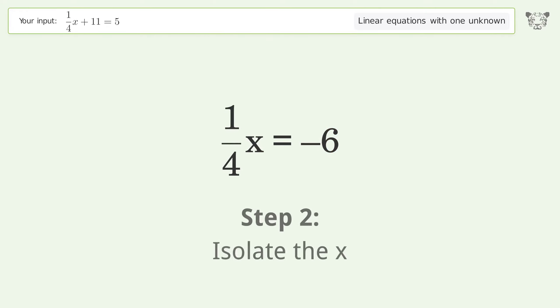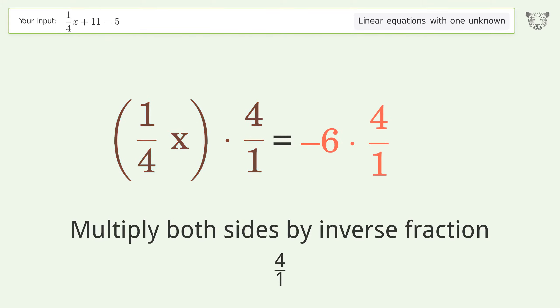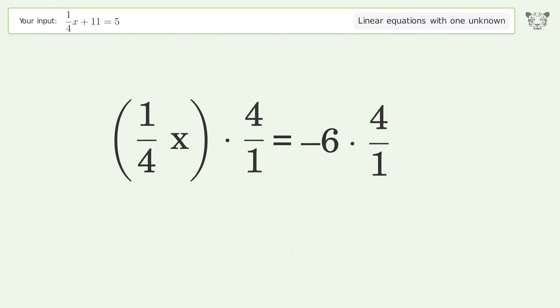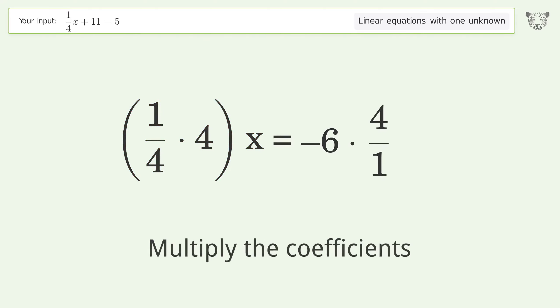Isolate the x: multiply both sides by the inverse fraction, 4 over 1. Group like terms, then multiply the coefficients.